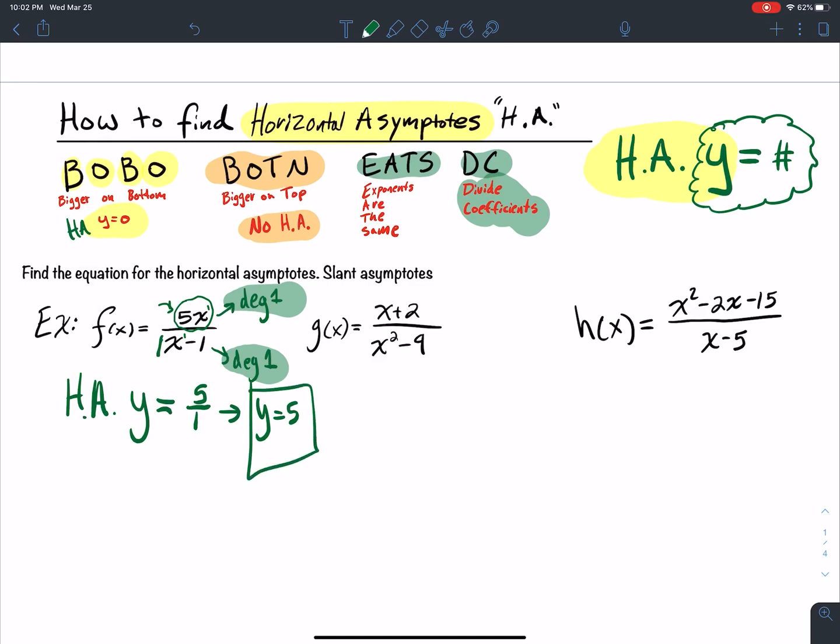For the next one, I look at the degree. The degree of the numerator is degree 1. The degree of the denominator, I look at the largest degree term, is degree 2. So what does that tell me? I'm actually going to be bigger on bottom. Bigger on bottom tells me what? Bigger on bottom is Bobo, which is horizontal asymptote y equal to 0.